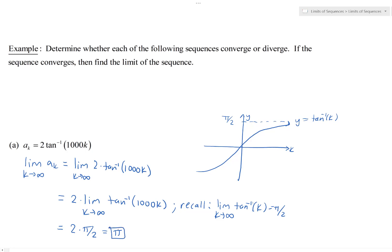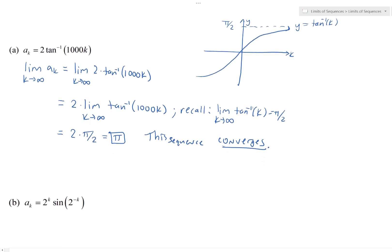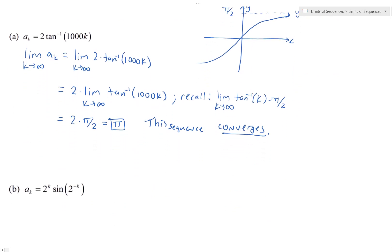Hence the limit as k goes to infinity of a_k = 2·arctan(1000k) equals π. This sequence converges.